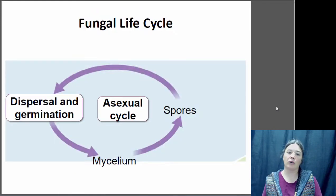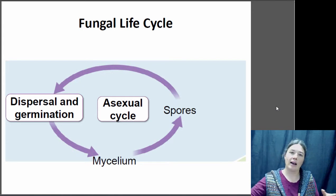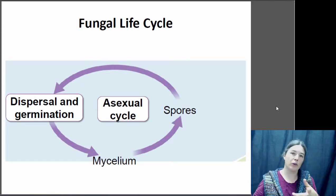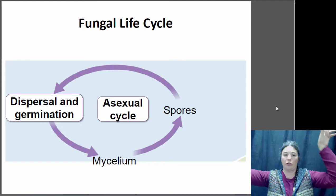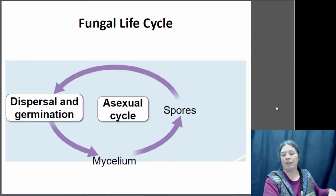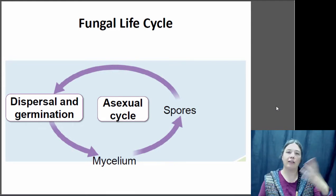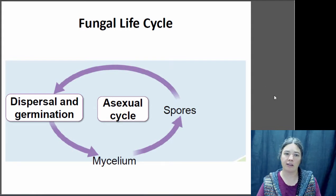Looking at the fungal lifecycle: when reproducing asexually, the mycelium shoots up some sort of fruiting body — the reproductive structure — and releases spores that are identical to the parent. Those spores float on the wind, land, germinate, grow more hyphae, grow a new mycelium, and produce more spores. There's no mating involved; it's just asexual reproduction.